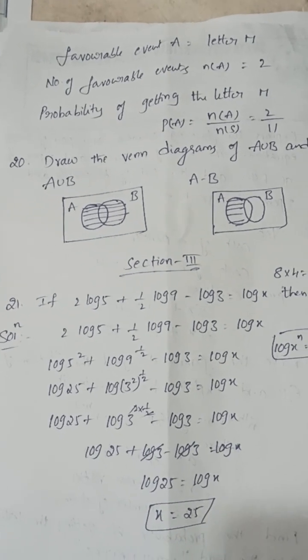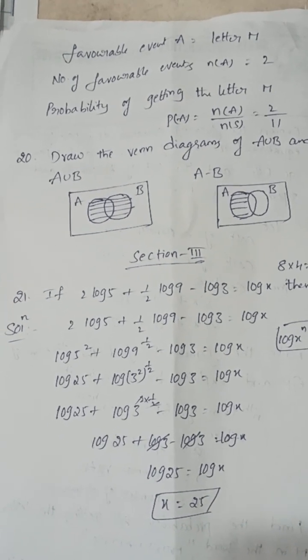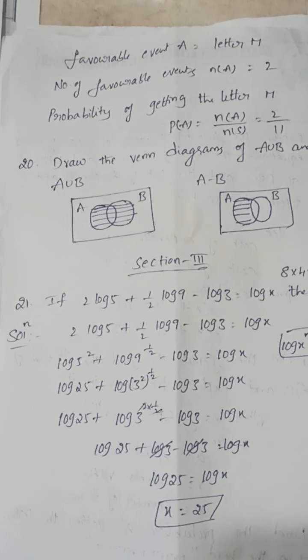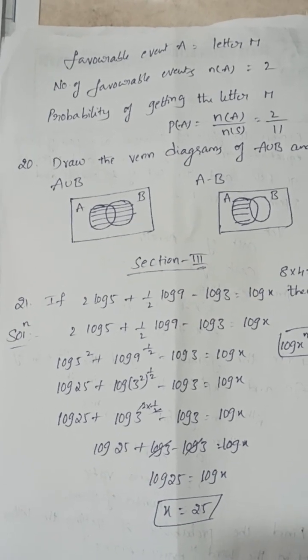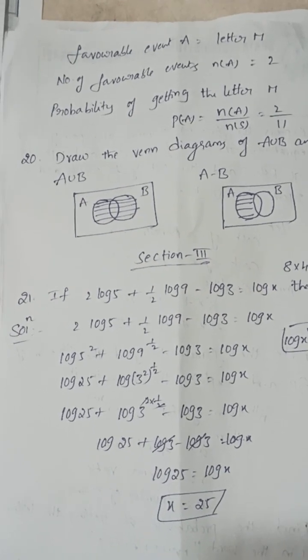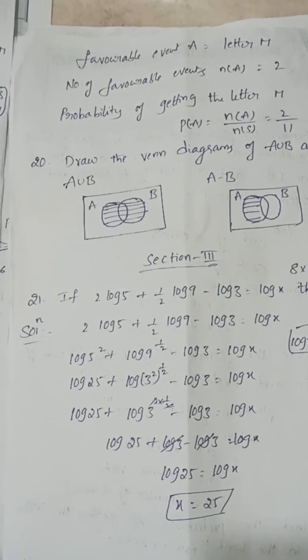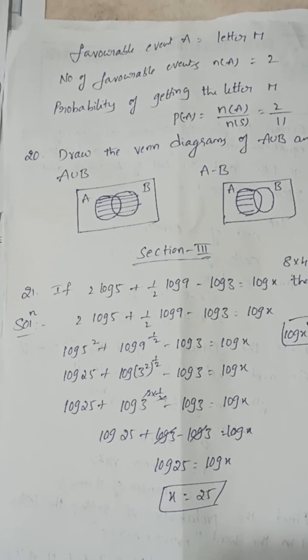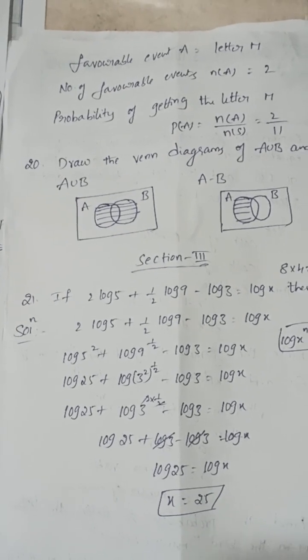Draw the Venn diagram for A∪B and A−B. For A∪B, shade both sets. For A−B, draw only the A set without the B portion.